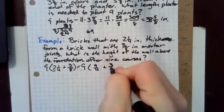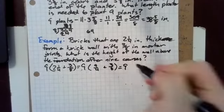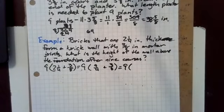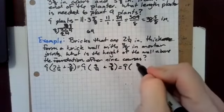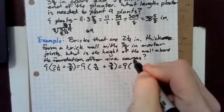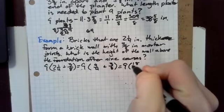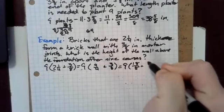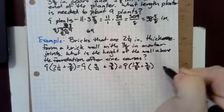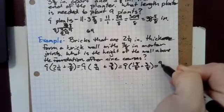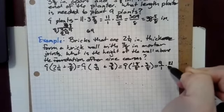Plus three eighths. To put this in terms of the least common denominator, that's going to be 18 eighths plus three eighths. That is nine over one times 21 over eight.